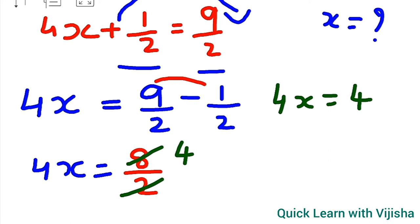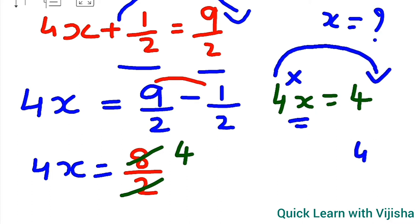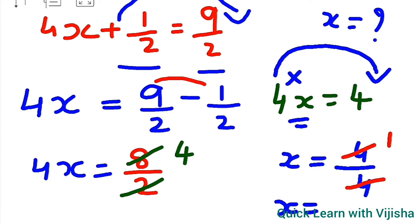We need to find only the value for x. The 4 is extra with x and is in the form of multiplication, so its opposite is division. We take 4 to the other side, giving x equals 4 upon 4. The 4s cancel, so the value for x is 1.